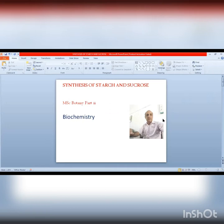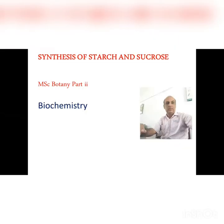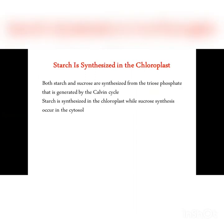Bismillahirrahmanirrahim. Dear students, our today's topic is synthesis of starch and sucrose. Both starch and sucrose are synthesized from triose phosphate that is generated by the Calvin cycle, talking about dihydroxyacetone phosphate. Synthesis of starch takes place in the chloroplast while sucrose synthesis occurs in the cytosol.